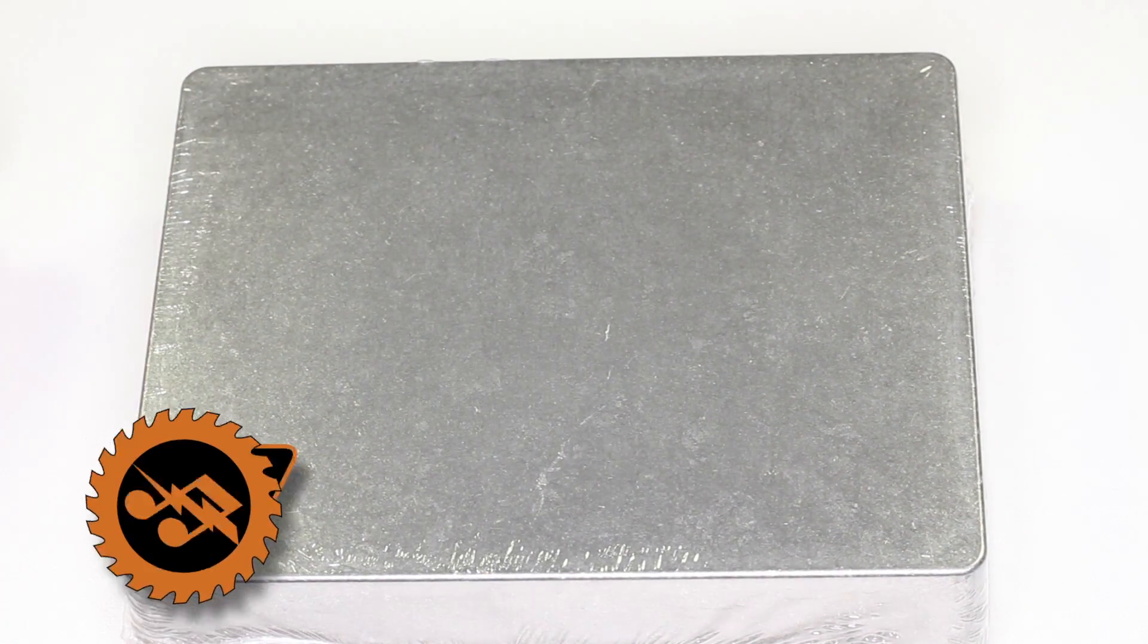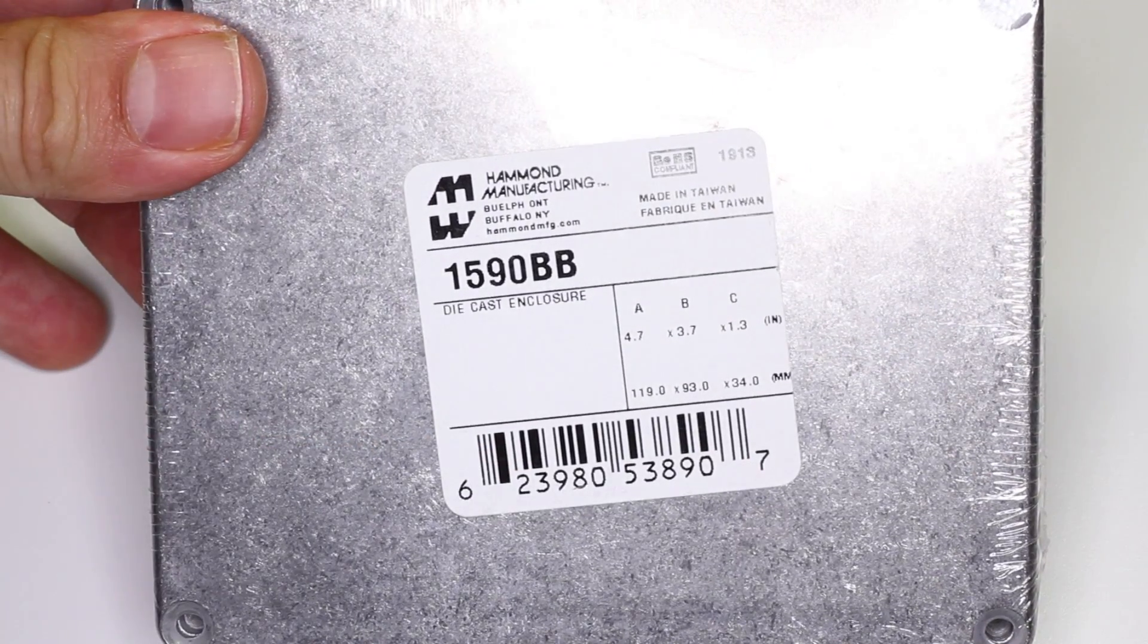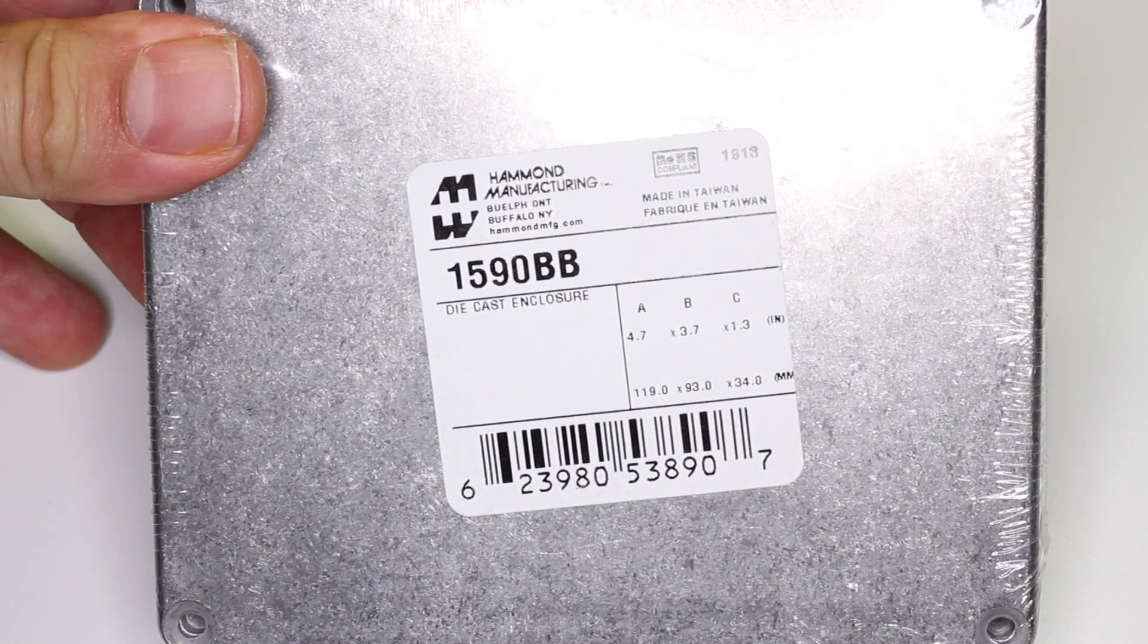For the enclosure, I'm using this aluminum box from Hammond Manufacturing. As you can see, it comes in raw aluminum and also some other colors such as this orange powder coat.